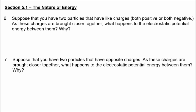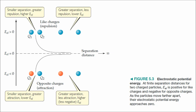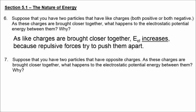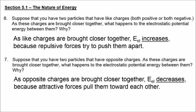For questions six and seven, it would be helpful to look at figure 5.3 in your textbook. The diagram shows that if you take two charges that would normally repel each other and bring them closer together, you are going to increase the potential energy. But if they attract each other, then as they get closer together, the potential energy decreases. In number six, you have like charges which repel, so as they are brought closer together, the potential energy increases. But if they were opposite charges, the potential energy would decrease because attractive forces pull them toward each other.